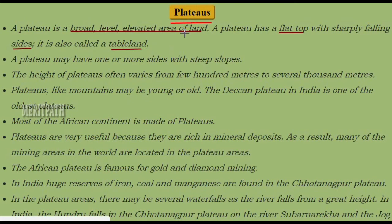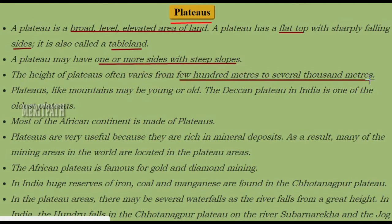The next topic is plateaus. Plateaus are broad, level, elevated areas of land. They are elevated but not as high as mountains. A plateau has a flat top and sharp steep sides, which is why it is also known as a tableland. The height of a plateau can extend from 100 meters up to several thousands of meters. An example of the oldest plateau in India is the Deccan Plateau.